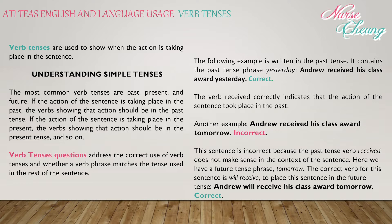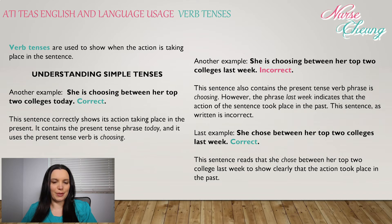'Andrew received his class award tomorrow.' — this is incorrect, because the past tense verb 'received' does not make sense with the future tense phrase 'tomorrow.' The correct verb for this sentence is 'will receive': 'Andrew will receive his class award tomorrow.'